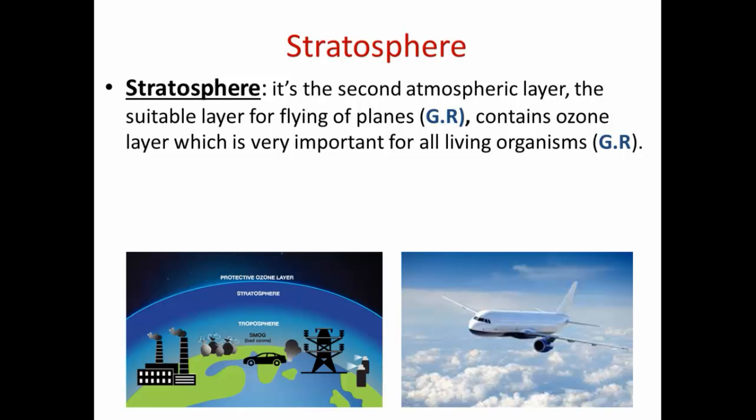The ozone layer is very harmful for living organisms if depleted. The temperature at this layer is 0 degrees Celsius at its base and reaches minus 60 degrees Celsius at its top. The normal atmospheric pressure is 0.001 bar.